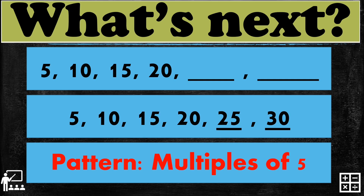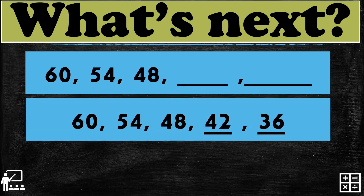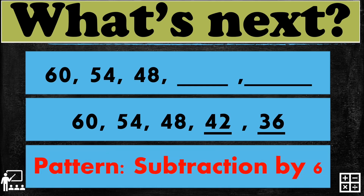Let's try another example. The second sequence is 60, 54, 48. Can you guess what are the two next numbers? The two next numbers are 42 and 36. So the sequence for this example is 60, 54, 48, 42, and 36, and the pattern used is subtraction by 6.